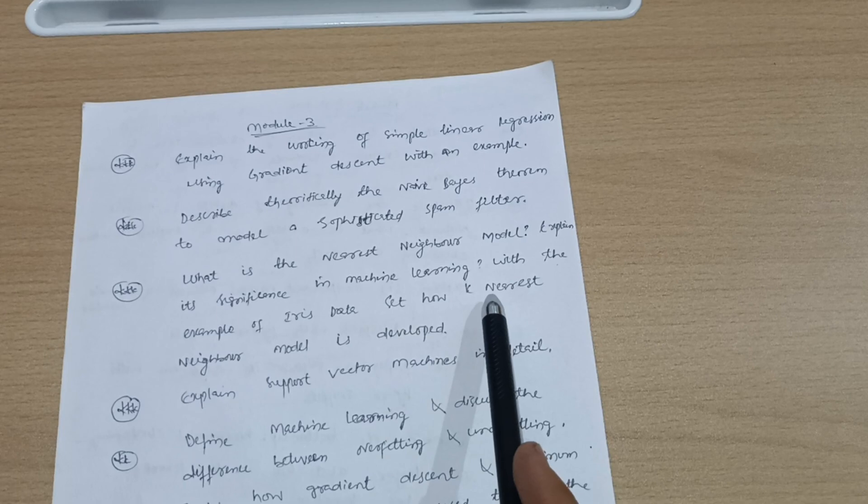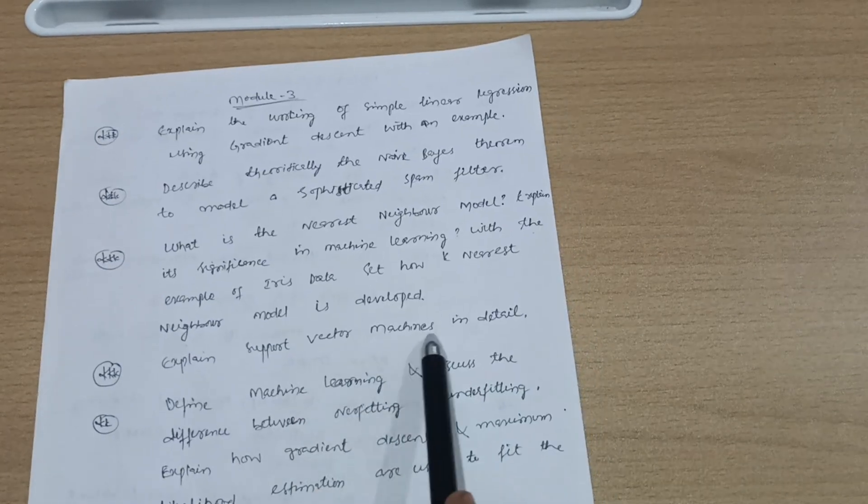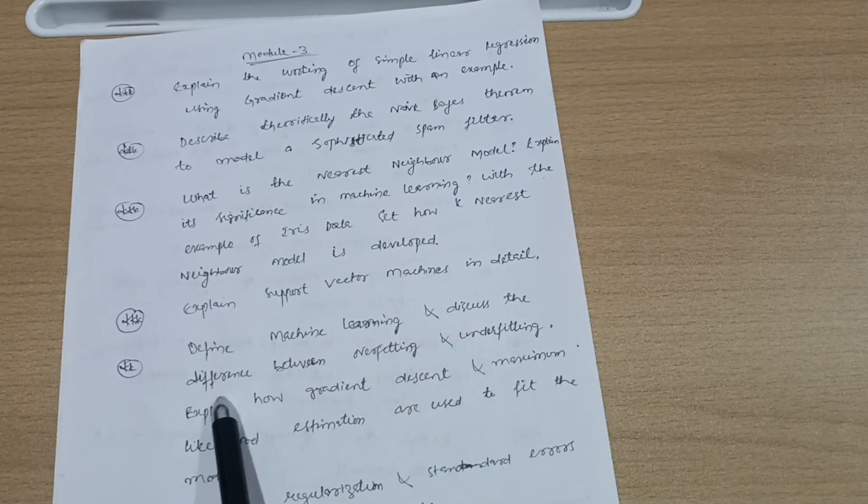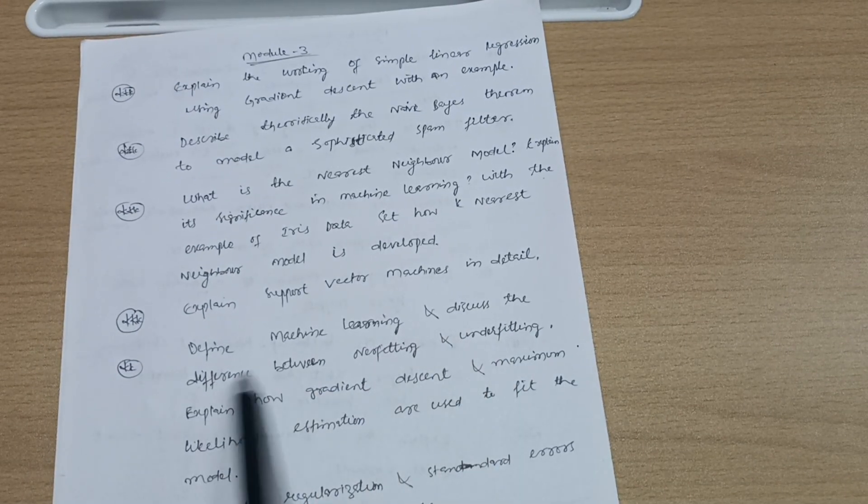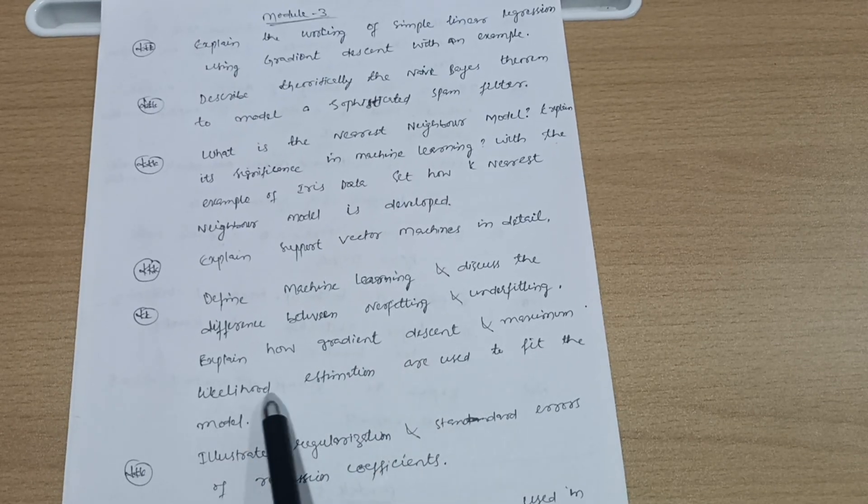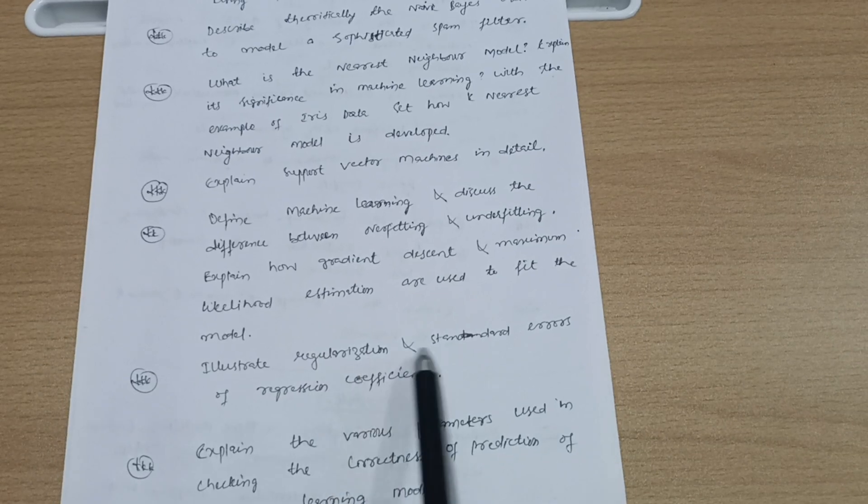How is k-nearest neighbor model developed? Explain support vector machines in detail. Define machine learning and discuss the difference between overfitting and underfitting—this is super important. Explain how gradient descent and maximum likelihood estimation are used to fit the model.